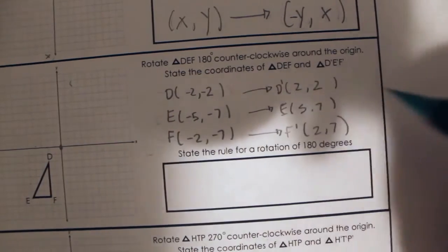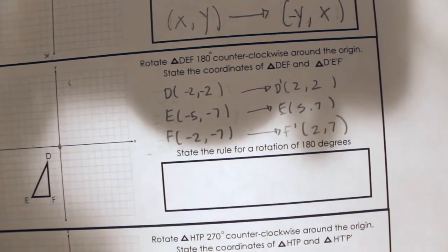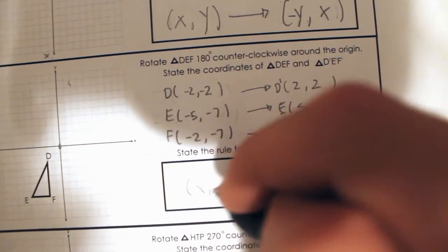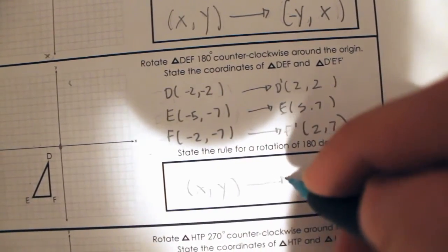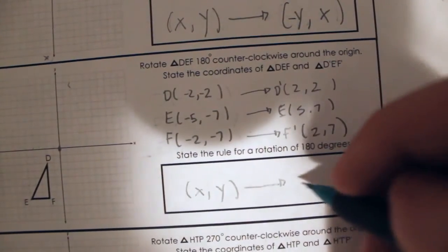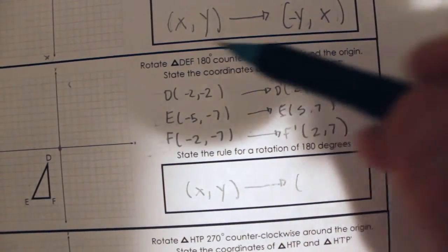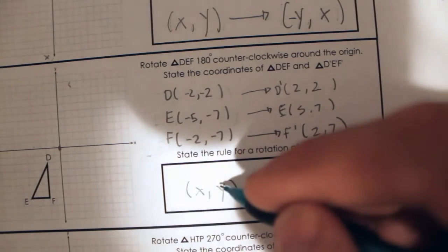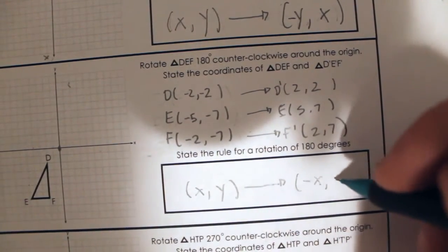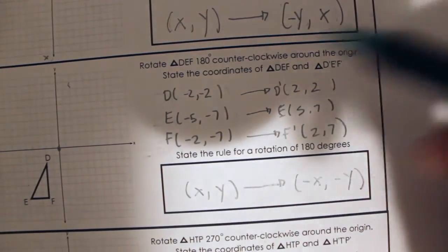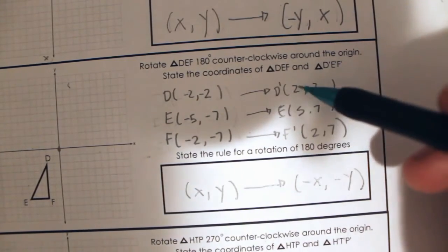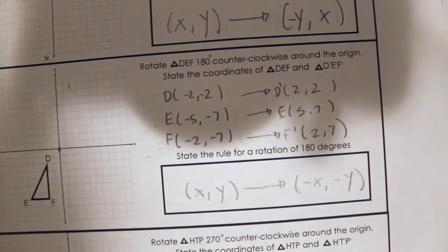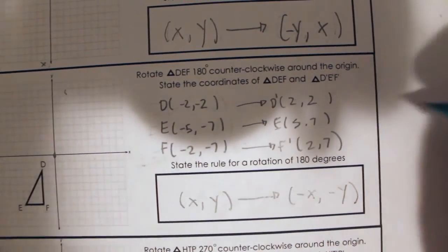Can you see the pattern? For a 180-degree rotation, all you have to do is just change the signs of both x and y. Positive x, positive y becomes negative x, negative y, and vice versa. So we just negate the values of x and y. That's the rule — or you could just do 2 turns.